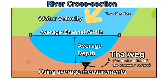You can use the average width of the channel and the average depth. The deepest part is called the Thalweg, which shows the line or area of deepest flow and also corresponds to the fastest velocity. The average measurements will generally suffice depending on how difficult it is to get a more accurate measurement.